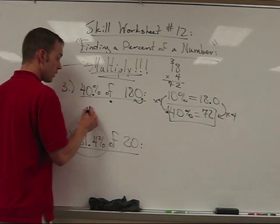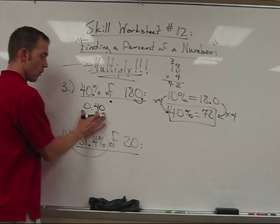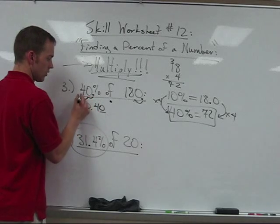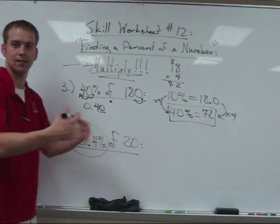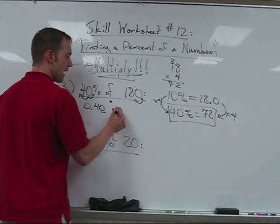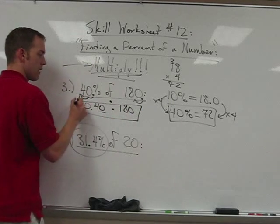And as a decimal, 41 hundredths is written like so. Okay? So 40 hundredths. In other words, I took the decimal and we scooched it back twice to the left. It's this constant shifting of a decimal. I want to take 0.40 times 180.